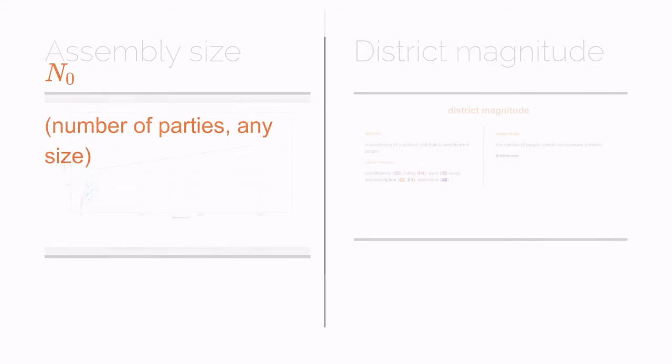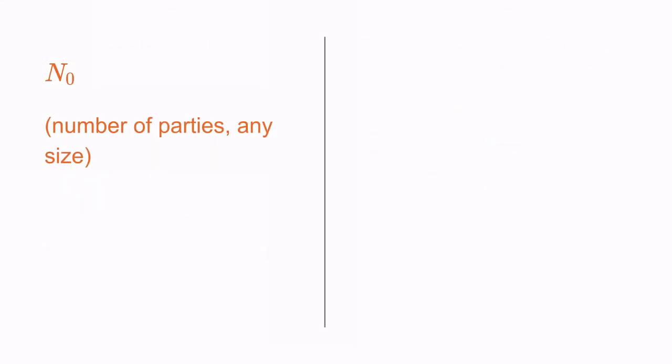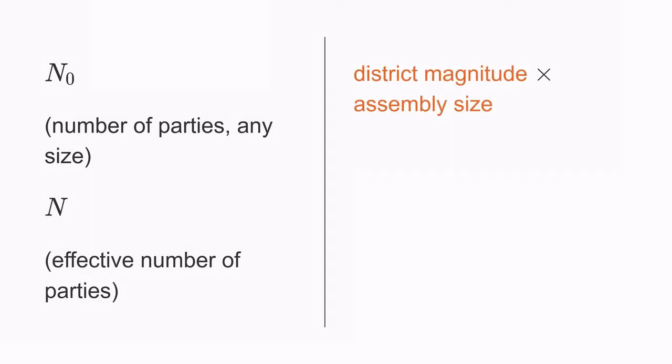The seat product model is a model which explains how many parties and how many effective parties there are in a political system. It's called the seat product model because it's based on multiplying two terms together or taking their product. The seat product is district magnitude times assembly size, or M times S. In this video though, we'll focus more on district magnitude.